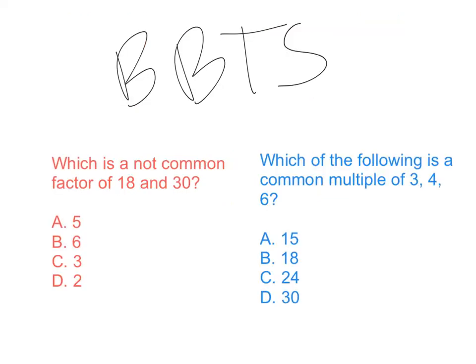For your bring-back-to-school problem, I've given you 2 problems. Problem number 1: which is not a common factor of 18 and 30 — there are some answer choices, so don't get tripped up. Problem number 2: which of the following is a common multiple of 3, 4, and 6. You can do it either way — the traditional way by listing the numbers out, or you can use the answers to make the question work for you. That's your bring-back-to-school problem. I'll see you in the morning.